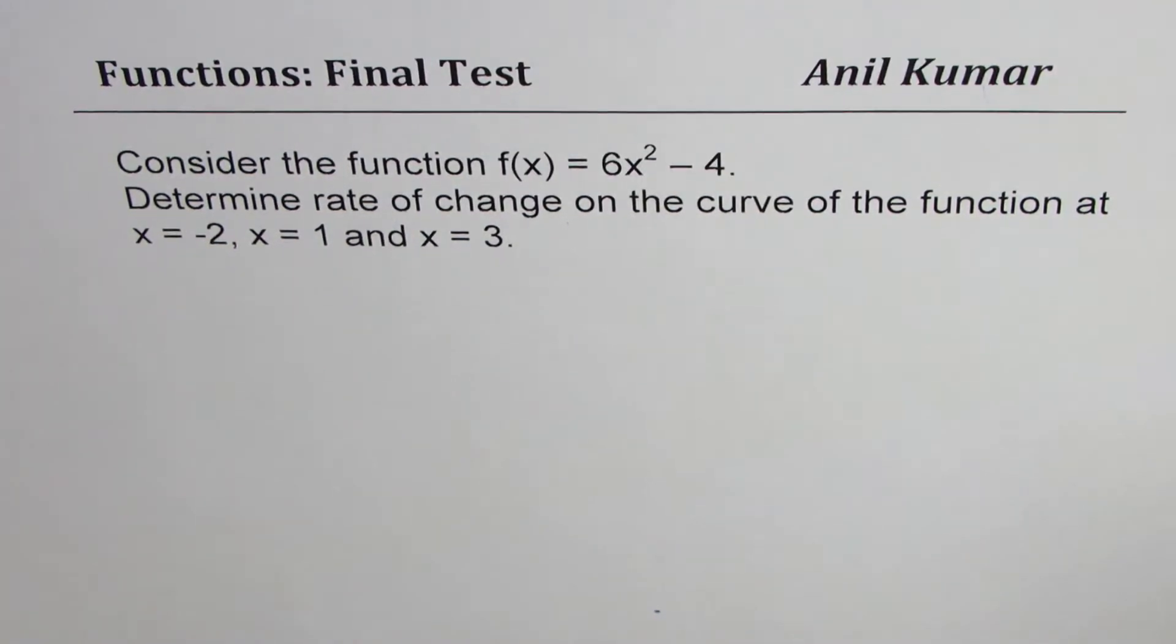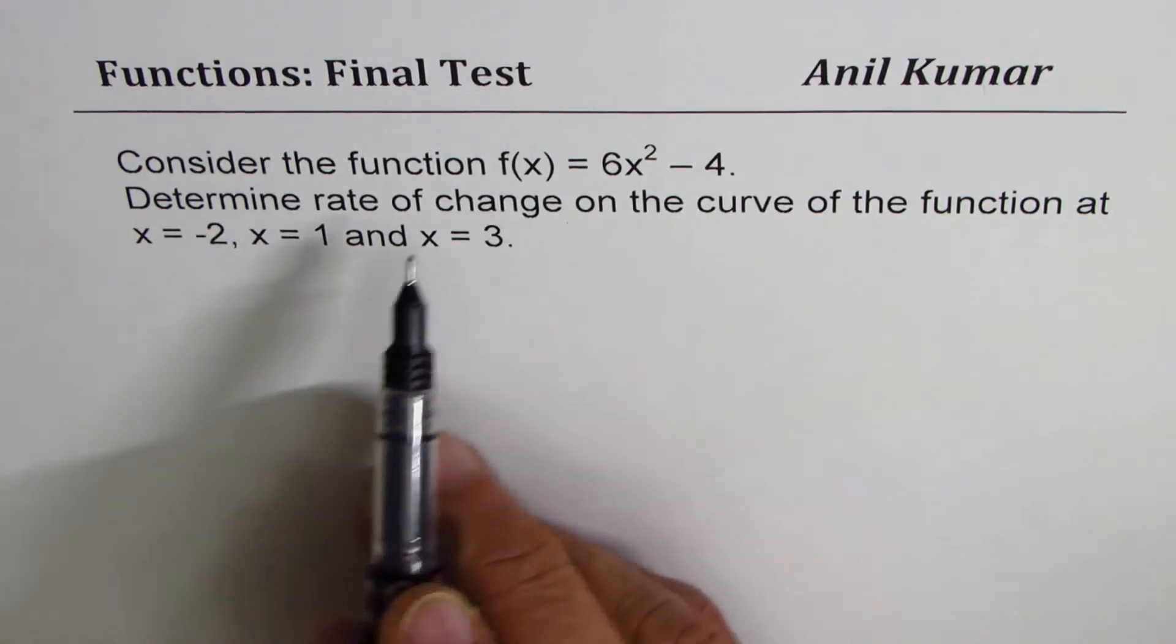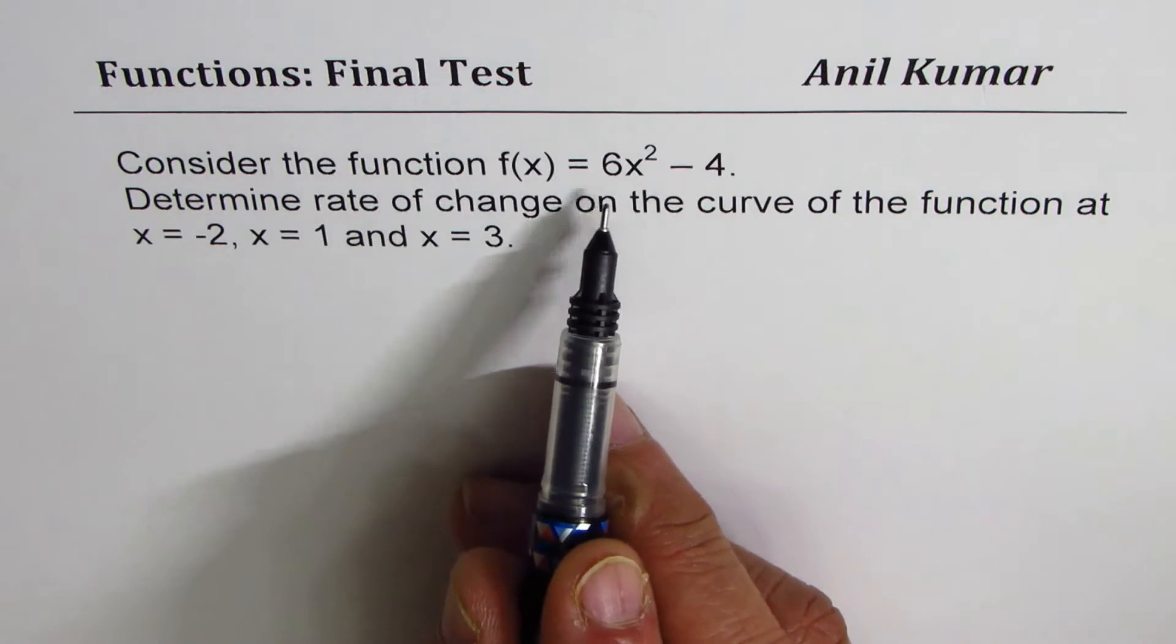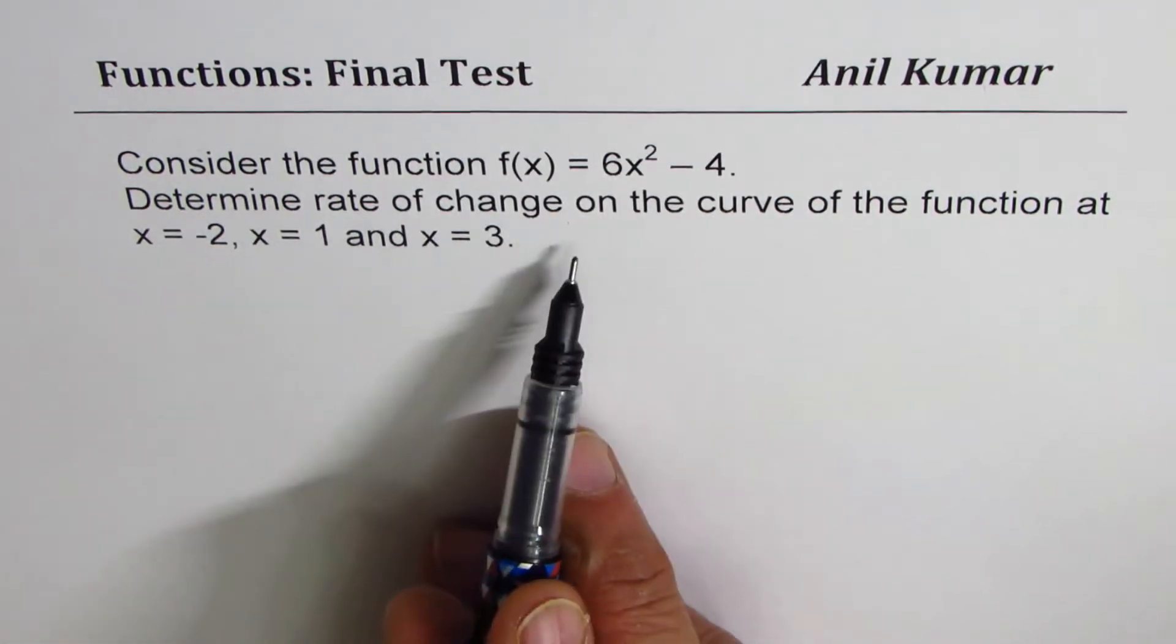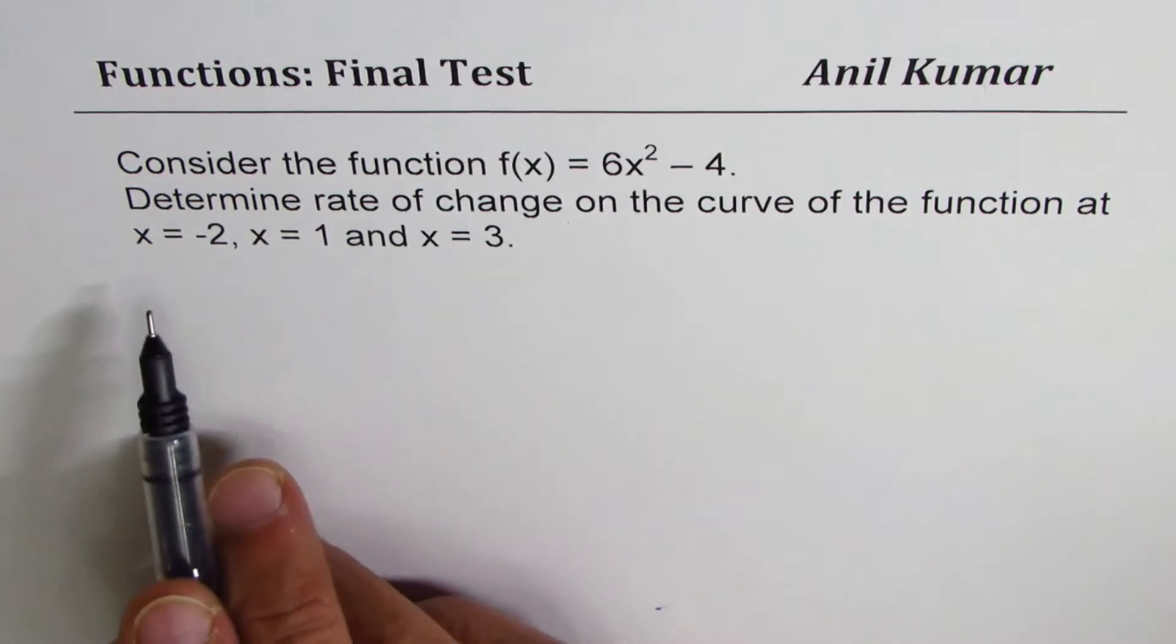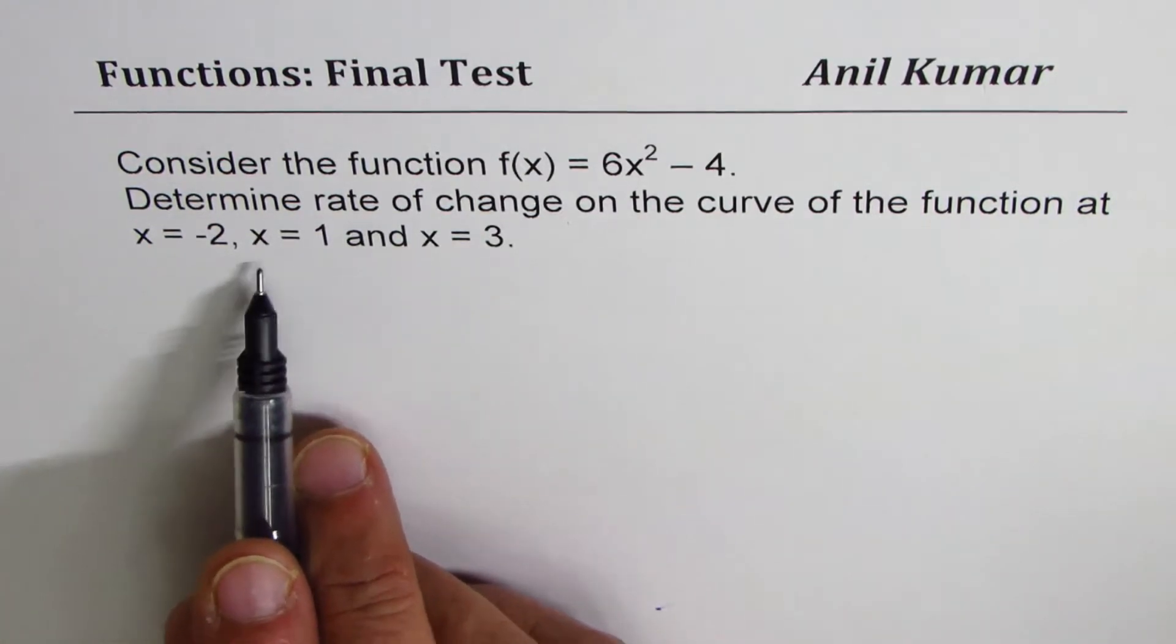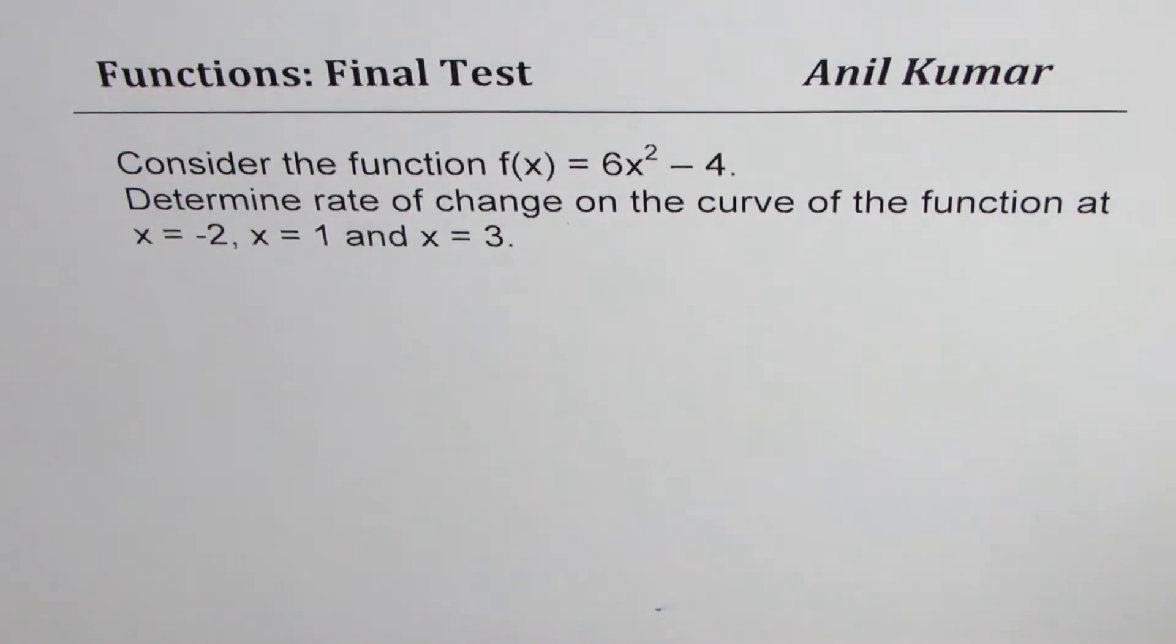I'm Anil Kumar sharing with you an excellent question on instantaneous rate of change. Consider the function f(x) = 6x² - 4. Determine rate of change on the curve of the function at x = -2, x = 1, and at x = 3.